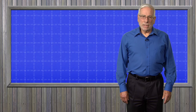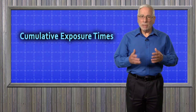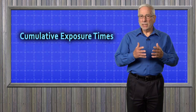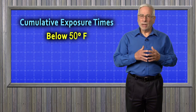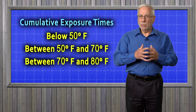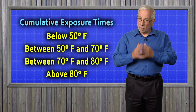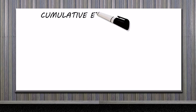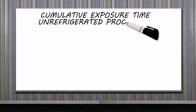The critical limit recommendations in Control Strategy 4 are based on cumulative exposure time for processing that occurs below 50 degrees Fahrenheit, between 50 and 70 degrees, between 70 and 80 degrees, and above 80 degrees.